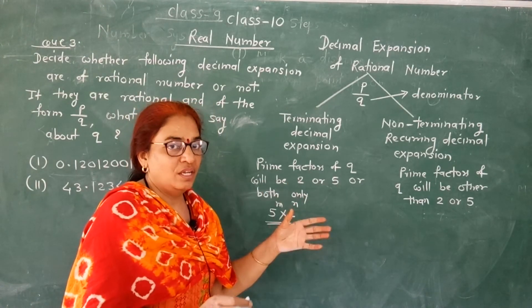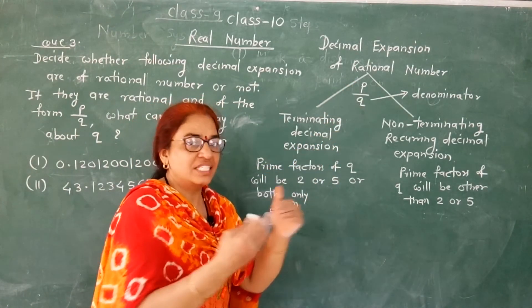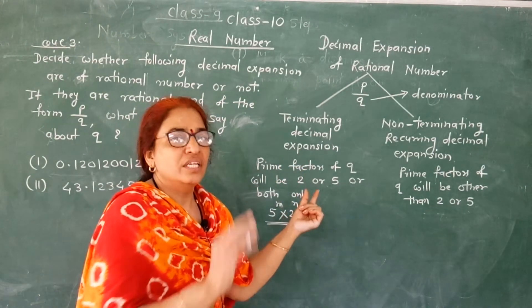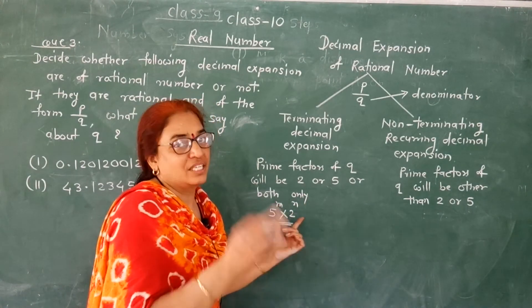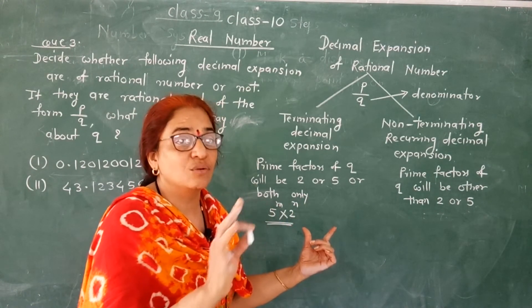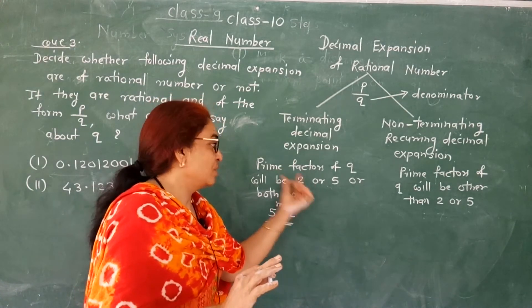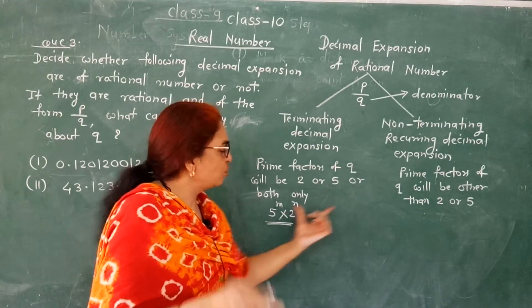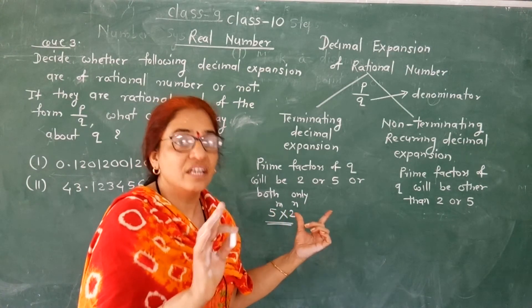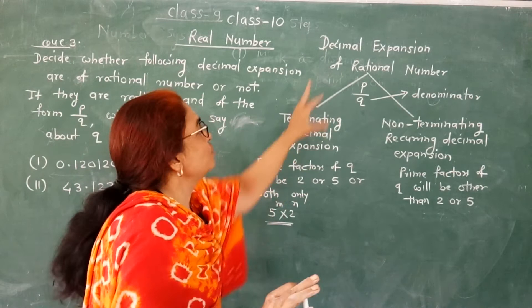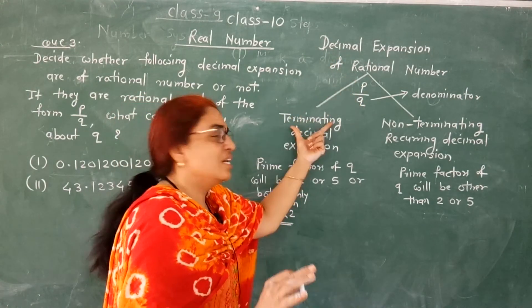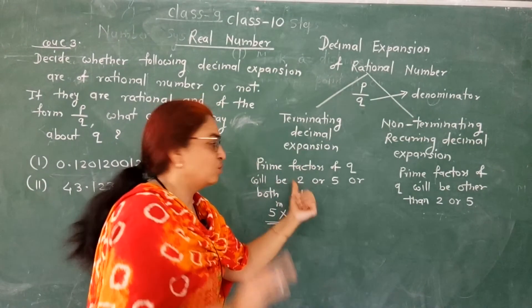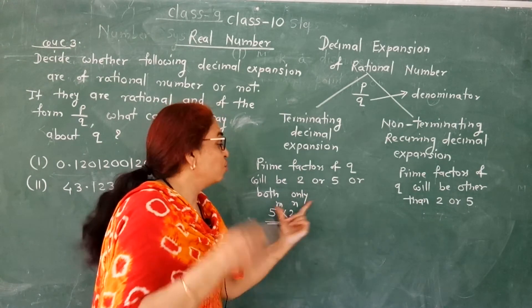This means if rational number denominator's prime factors are only 2, or only 5, or 2 and 5 both, then the rational number's decimal expansion will be terminating. What should happen to the denominator? Prime factors should be 2 or 5 or both.